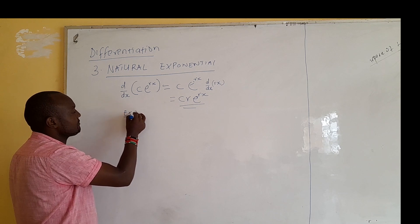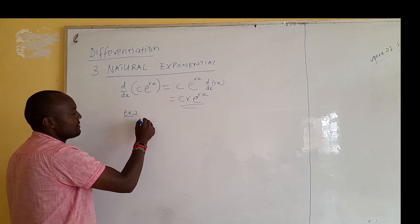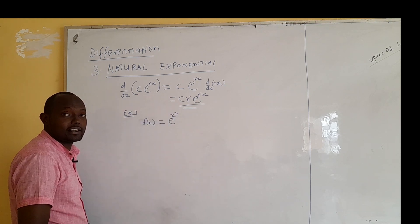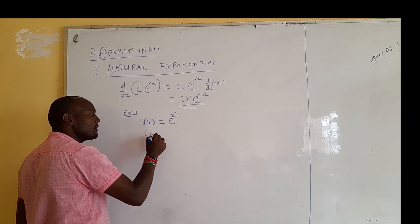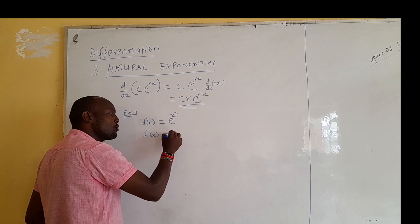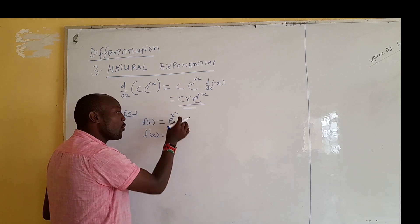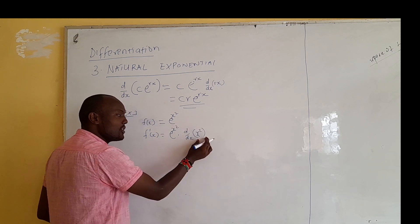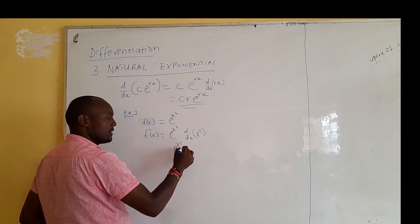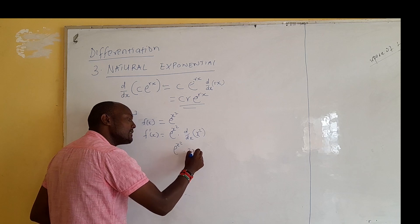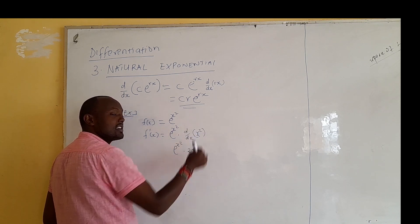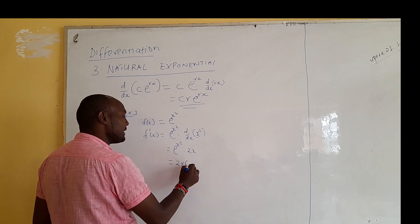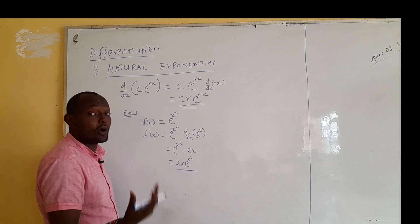Example 3: f(x) equals exponential to power x squared. How do we get the first derivative? We said our exponential will remain the way it is as e^(x²), but we must differentiate the power x². When you differentiate x², you get 2x, because you bring the 2 down and it becomes x to power 1. So my first derivative equals 2x·e^(x²). That's how we differentiate an exponential.